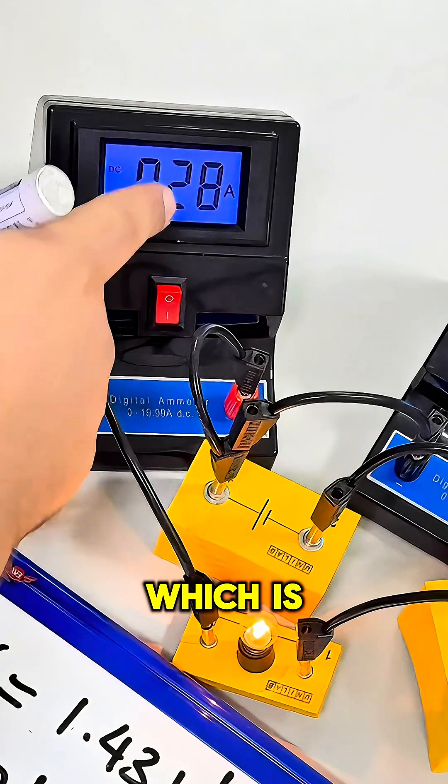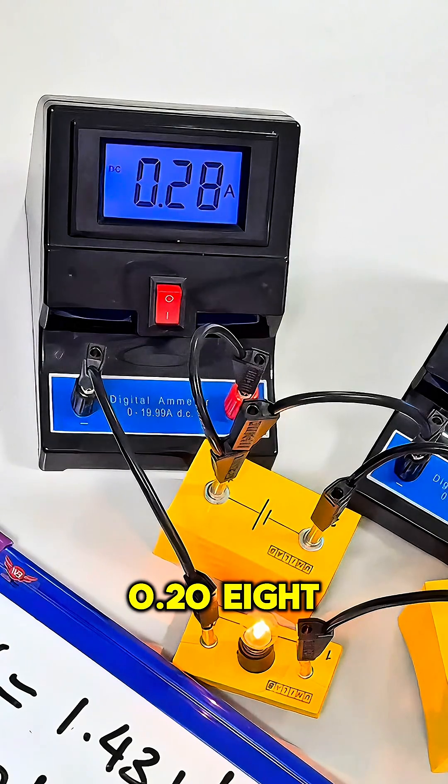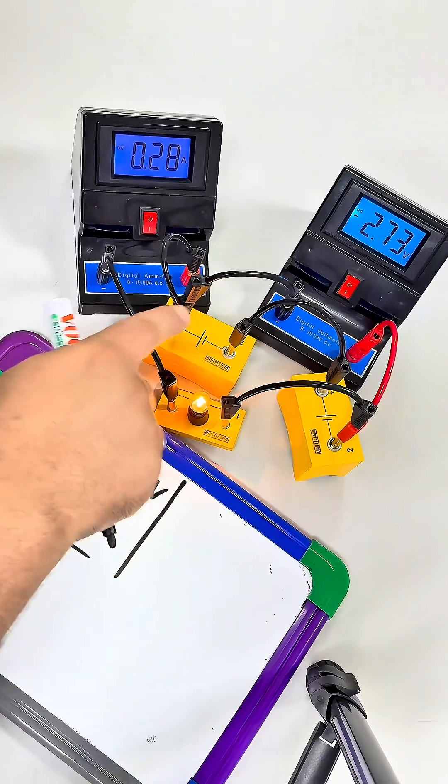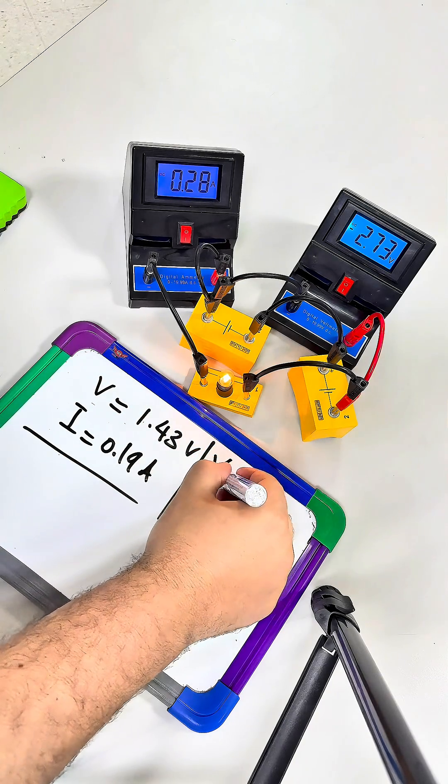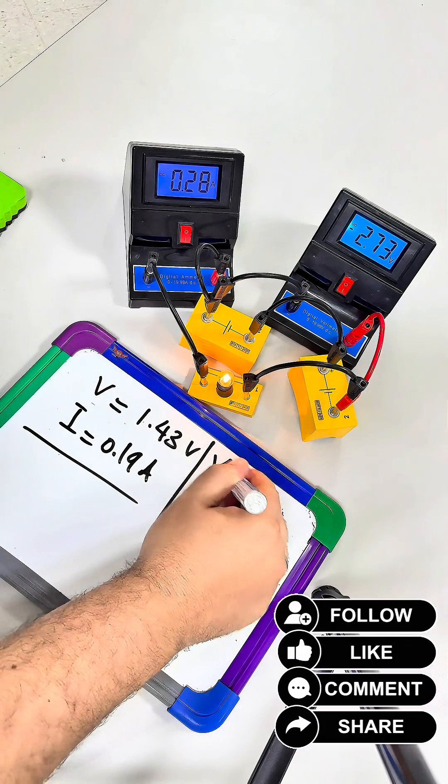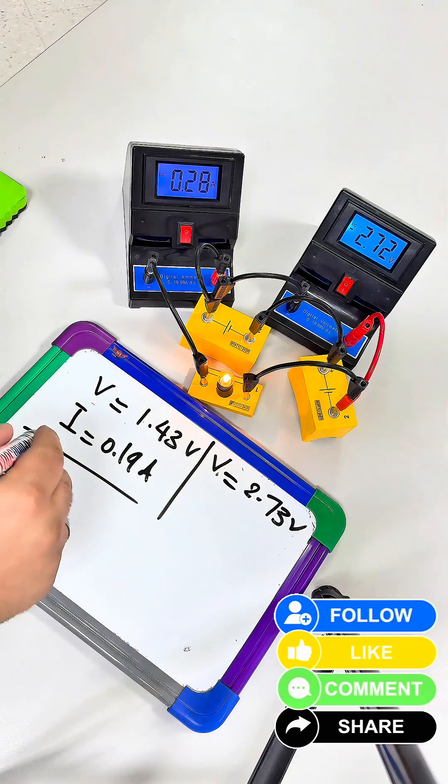The ammeter reading is 0.28 ampere. By the end of the video, we see that as the voltage increases, the current increases. If you like the video, please share, like, and subscribe to our channel. See you next video!